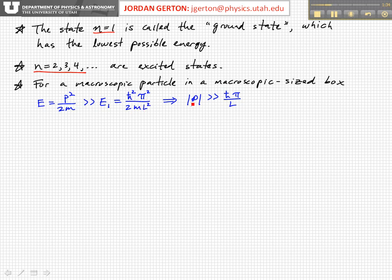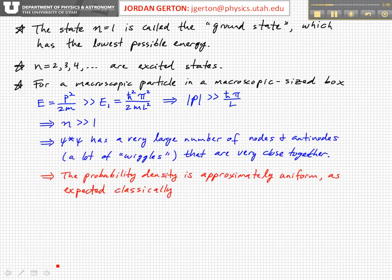If you look at this, the momentum of the particle is much, much bigger than h-bar pi over L. So this implies that the quantum number N is very, very large — much bigger than 1 — which means that the probability density, psi-star psi, has a very large number of nodes and antinodes. It wiggles a lot.